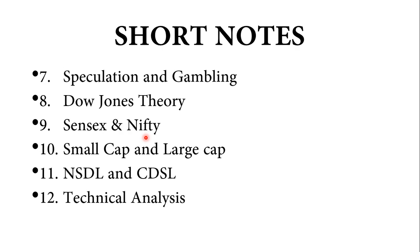Next: speculation and gambling — this was also in the long answer as distinguish between speculation and gambling, and here also we have it as a short note. Next: Dow Jones theory — a very important short note. Next: Sensex and Nifty — a short note on Sensex and Nifty is important. Then: what is small cap and large cap? Next: NSDL and CDSL. Then: credit rating agencies — a very important short note.